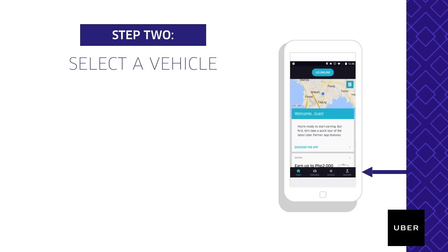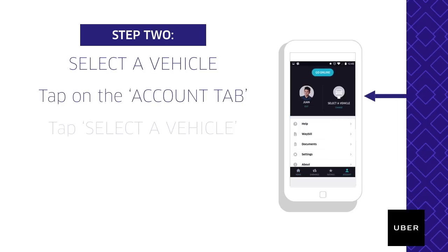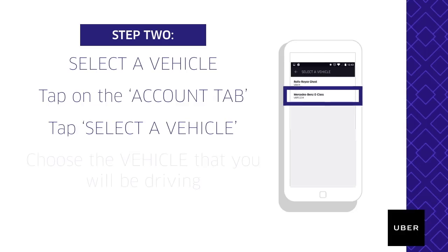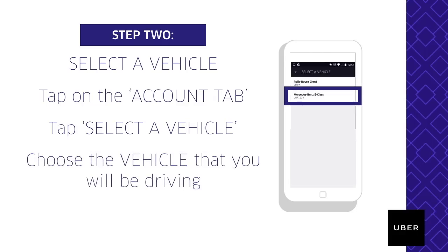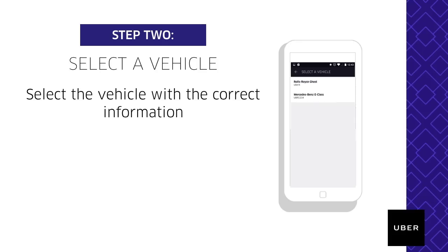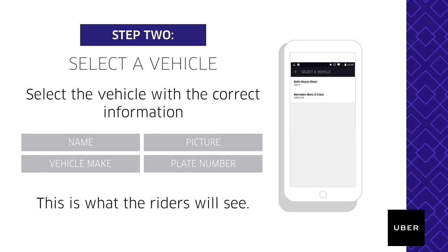Step 2: Select a vehicle. To do this, tap on Account. In the Accounts tab, press Select a Vehicle. Choose the vehicle with the correct model and plate number that will be used. This is very important because the rider will see your name, picture, model, and plate number when they request a ride.